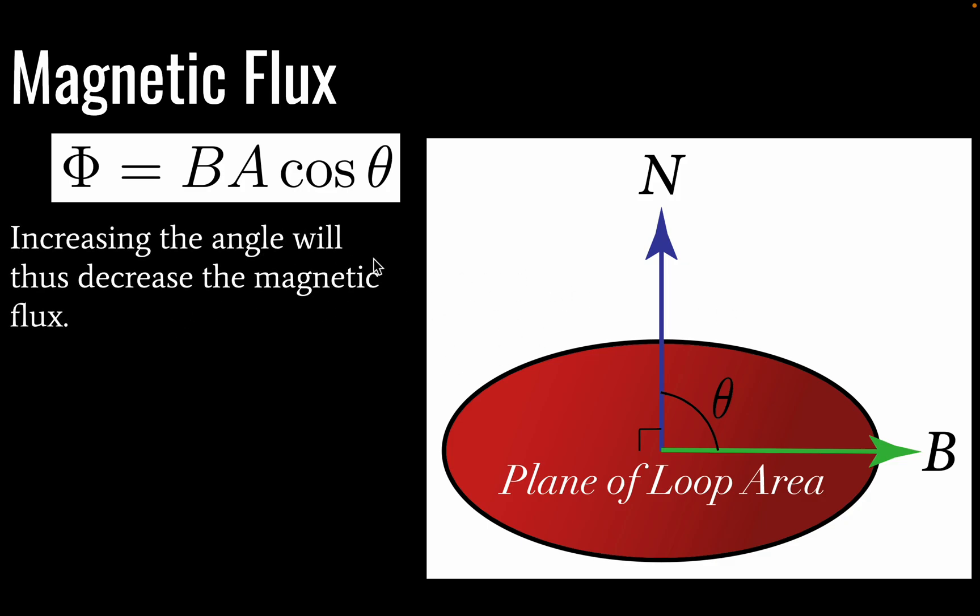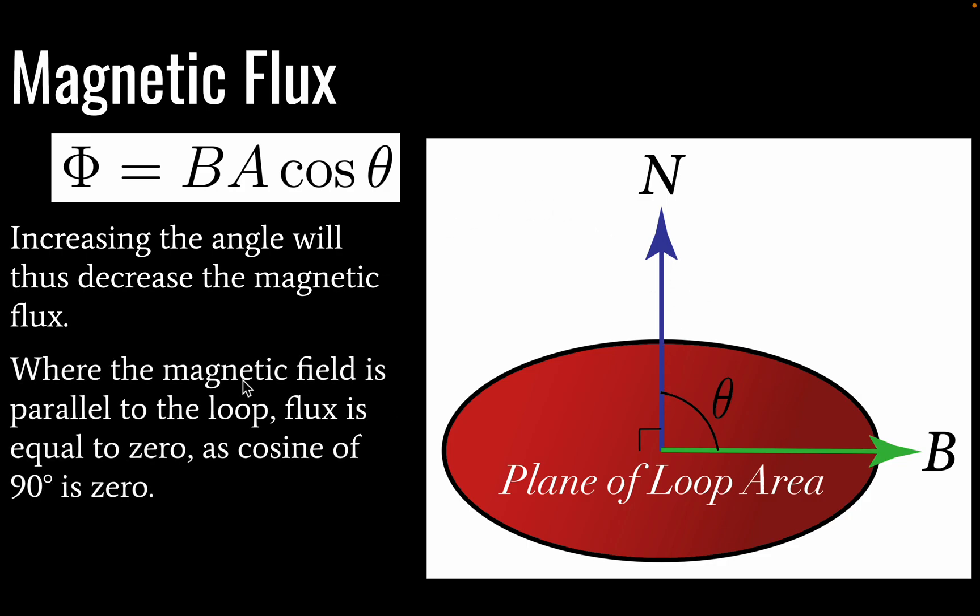So if we increase the angle here, we're going to decrease the magnetic flux. And where our magnetic field is parallel to the loop, flux will be equal to zero. And the reason for that, of course, is because cosine of 90 degrees is equal to zero. So our flux is going to decrease as we increase our angle. And where our magnetic field is parallel, we get zero.